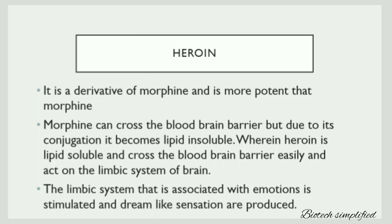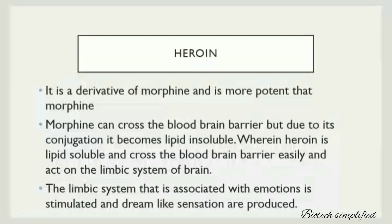After heroin crosses the blood-brain barrier, it acts on the limbic system of the brain. The limbic system is a part of the brain where behaviour and emotions are controlled. When heroin reaches the limbic system, a dream-like sensation is produced.